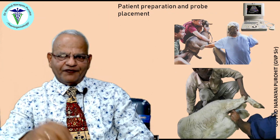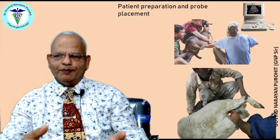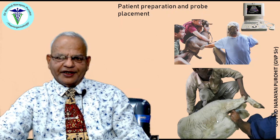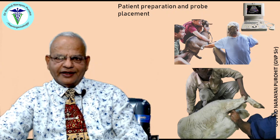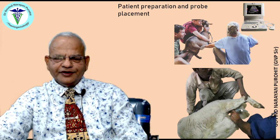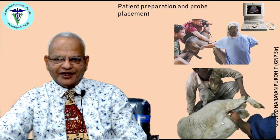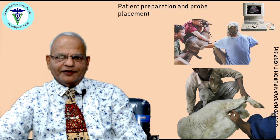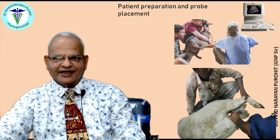The first thing for ultrasound examination is patient preparation and probe placement. One can examine both sheep and goat in a recumbent position or even in a standing position. The probe is placed between the limbs in a standing position, just ahead of the thighs and just ahead of the bladder, and then one has to move the probe in a W fashion — from one side, back, across, and back again — to ensure both sides of the abdomen are examined.